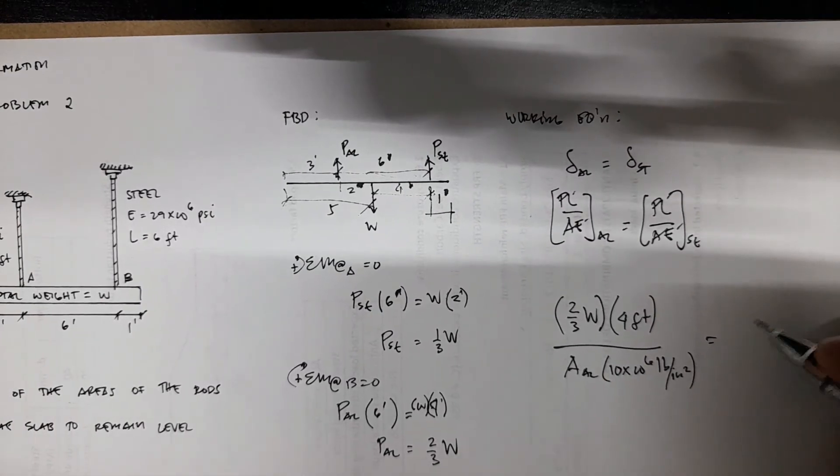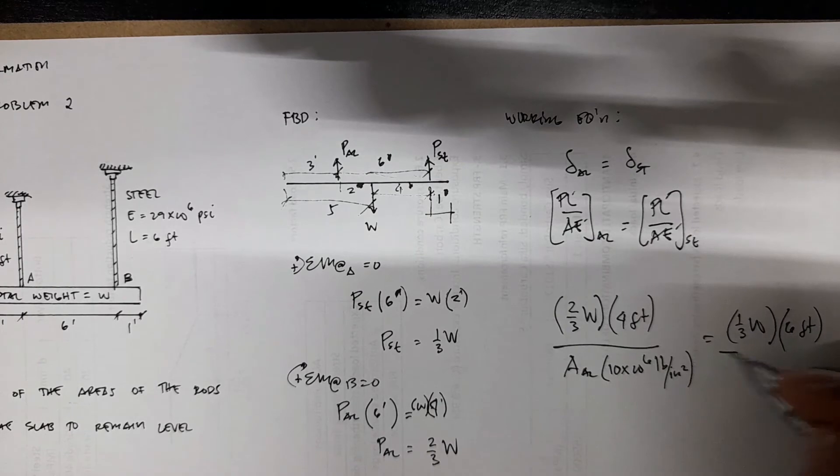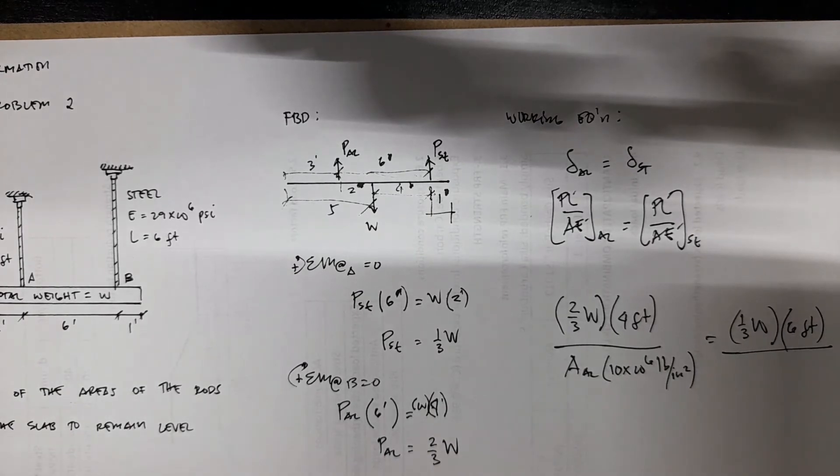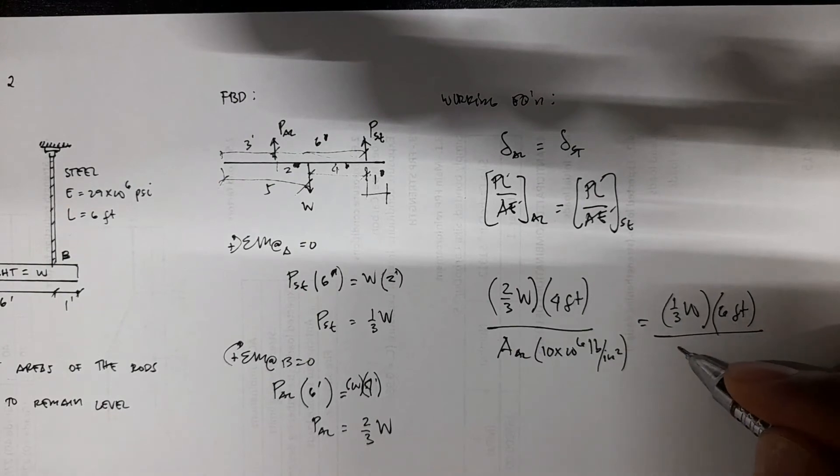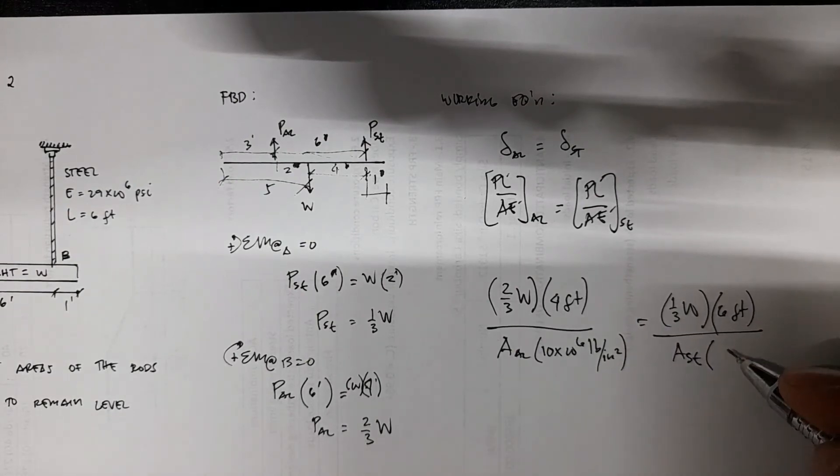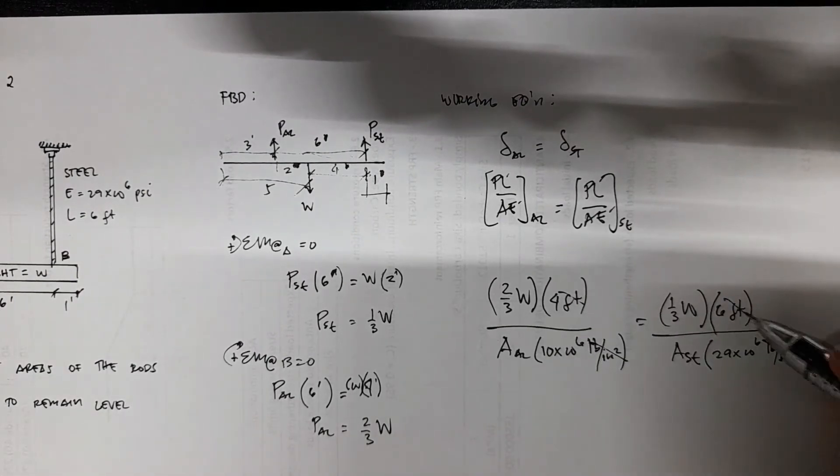We have P_ST is one-third W times 6 feet. Here you are required to find the ratio, which is dimensionless. Then you have A_ST and then you have 29 times 10 to the 6 pounds per square inch. All the units will cancel out.